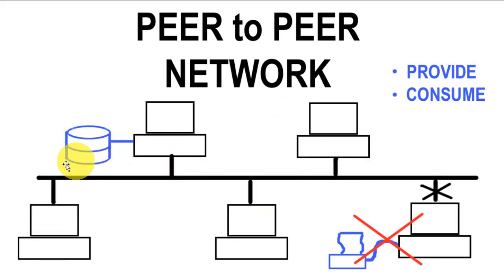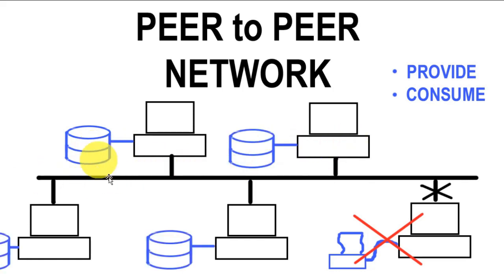Another problem is that in a peer-to-peer network there's no centralized place to save files. You could have shared storage scattered across multiple systems. When it comes time to backup and protect critical company data, you've got to go to each one of these hosts and back up their data — and you may not even know exactly where folks are saving it, since it could be all over the place on the hard drives.